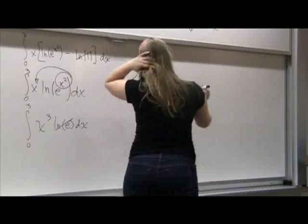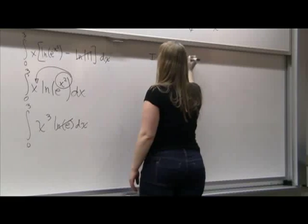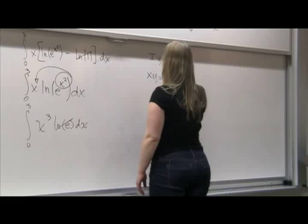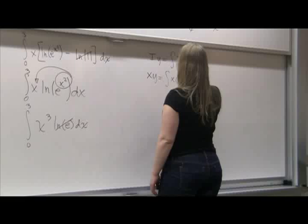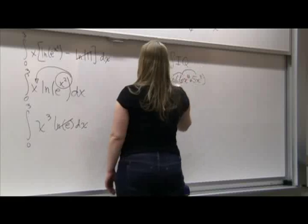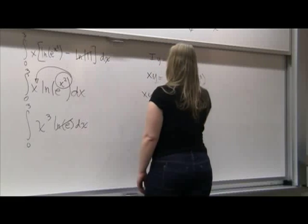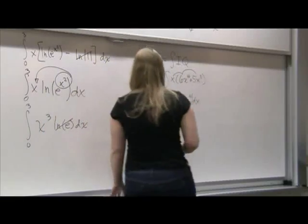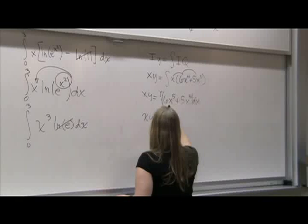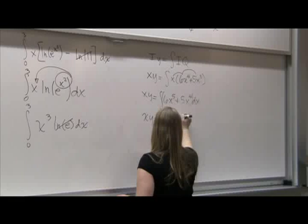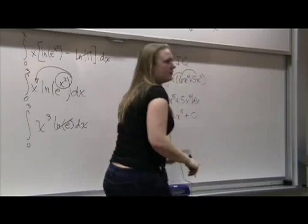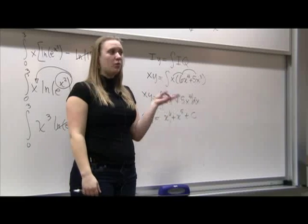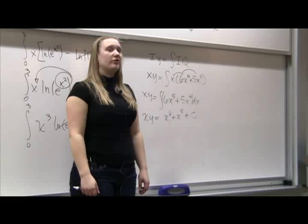Now that I know that, then we use i times y equals the integral of i times q. i is x. xy equals the integral of x times (6x to the 4th plus 5x cubed). I'm going to multiply it through. xy equals the integral of (6x to the 5th plus 5x to the 4th). I'm going to integrate that side. xy equals x to the 6th plus x to the 5th plus c. Let me stress the importance of putting the plus c right now. If you do not, you will get your 10.1, 10.2, and 10.4 problems all wrong. Wyckoff just told me that there are 6 or 7 of them on the test.